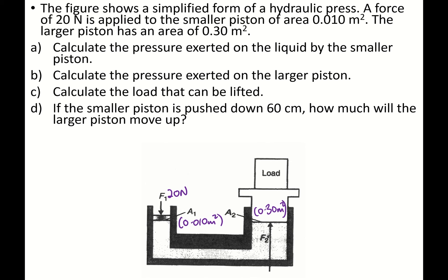Calculate the pressure exerted on the liquid by the smaller piston. So you are asked to calculate the pressure of liquid by the smaller piston, and that would be the 20 N and the 0.01 m². So the pressure equals force over area which equals 20 over 0.010, which is equal to 2,000 N per m². So the pressure exerted by the small piston is 2,000 N per m².